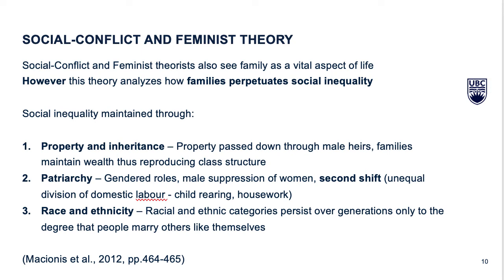Like structural functionalists, social conflict and feminist theorists also see the family as a vital aspect of life. However, this theoretical approach highlights how the family perpetuates social inequality. According to social conflict and feminist theorists, social inequality is maintained in three ways through the family. First, property and inheritance: in various cultures and countries around the world, past and present, property is passed down through male heirs. Also, passing down wealth allows families to maintain their wealth through generations and, as a result, reproduces class structures in society.